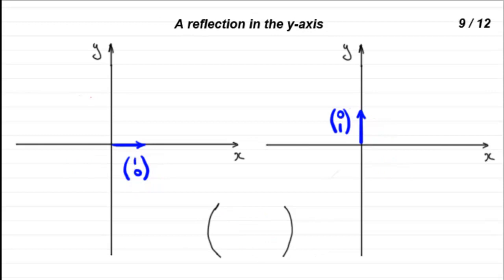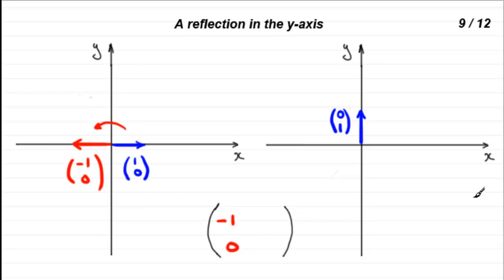Next is number 9, a reflection in the y-axis. The unit base vector (1, 0) is flipped over the y-axis to go to the position (−1, 0). The unit base vector (0, 1) just stays put because it's on the y-axis — it's invariant at (0, 1). The matrix has columns (−1, 0) and (0, 1).